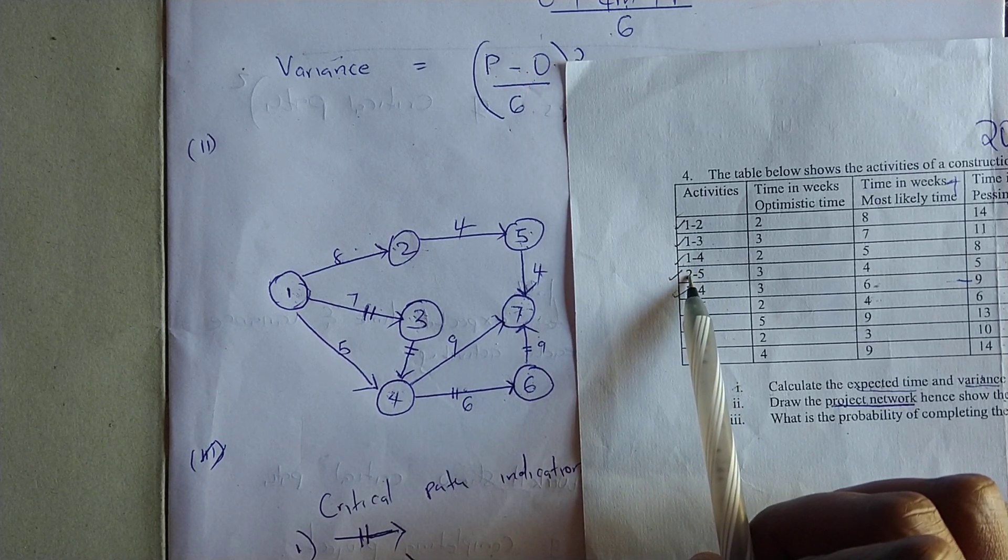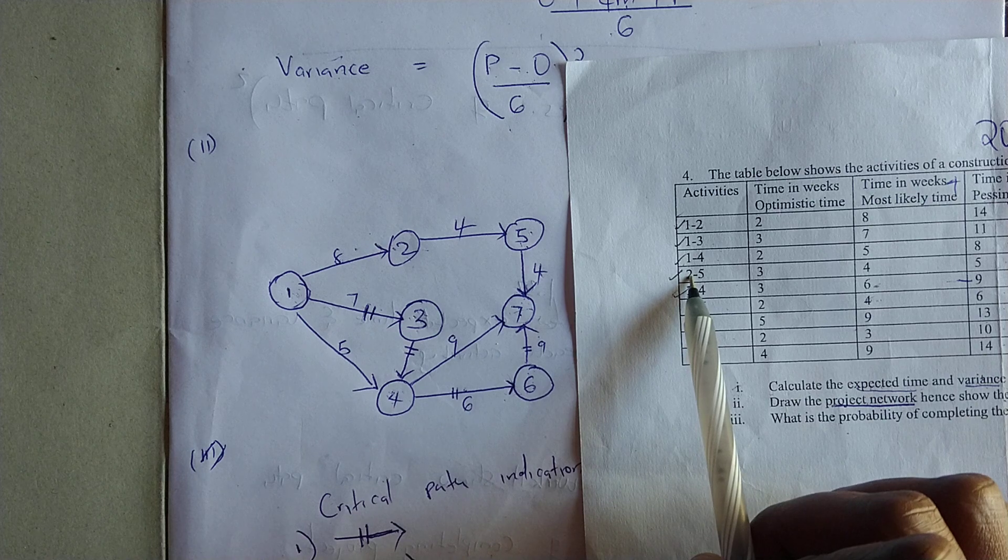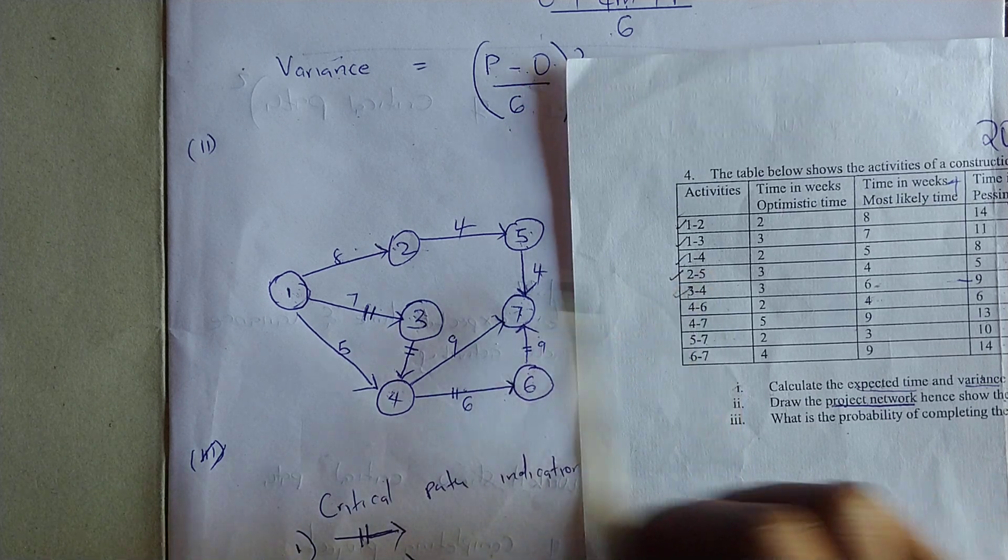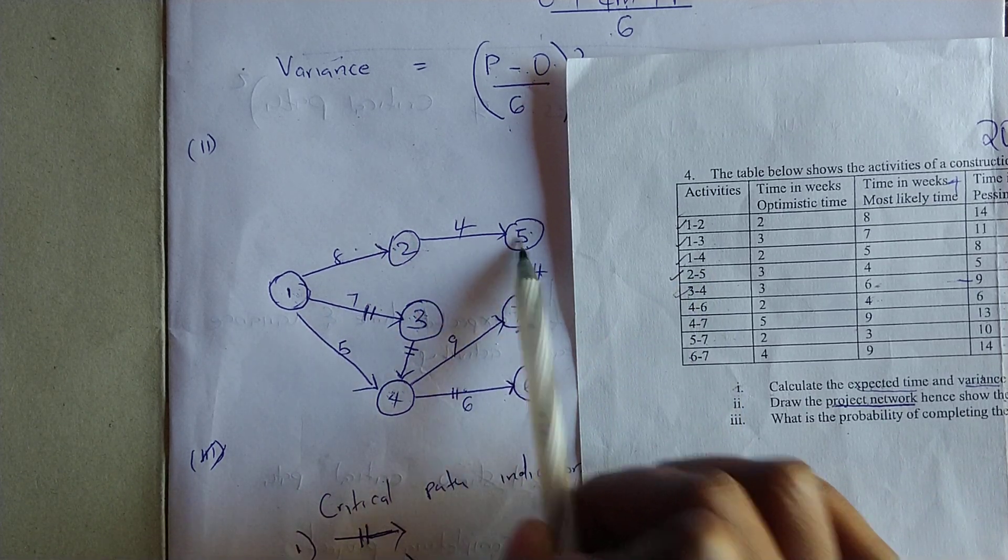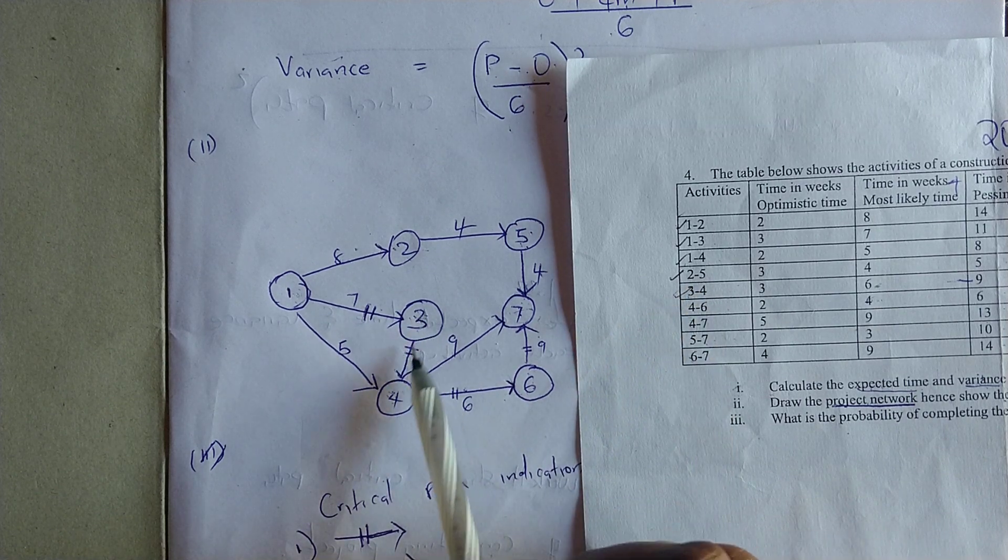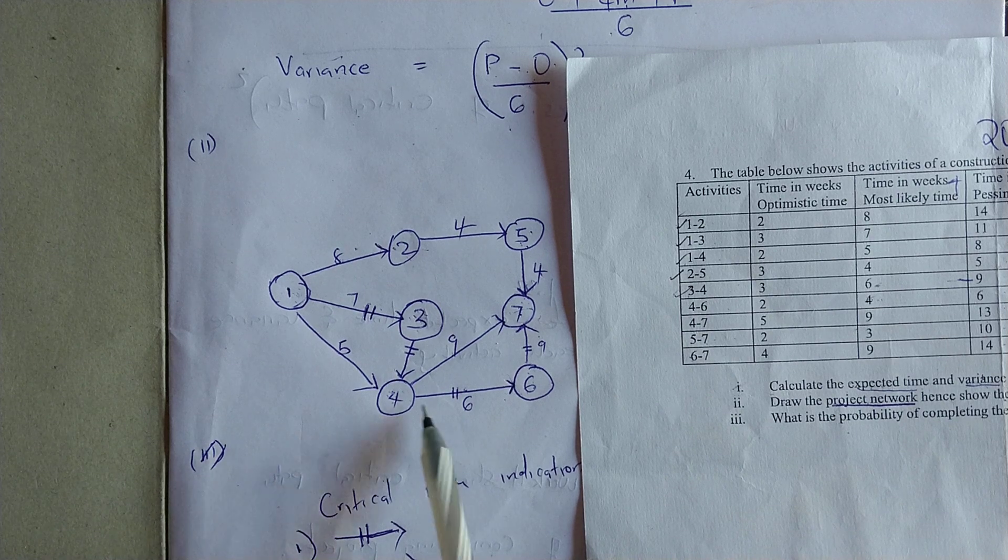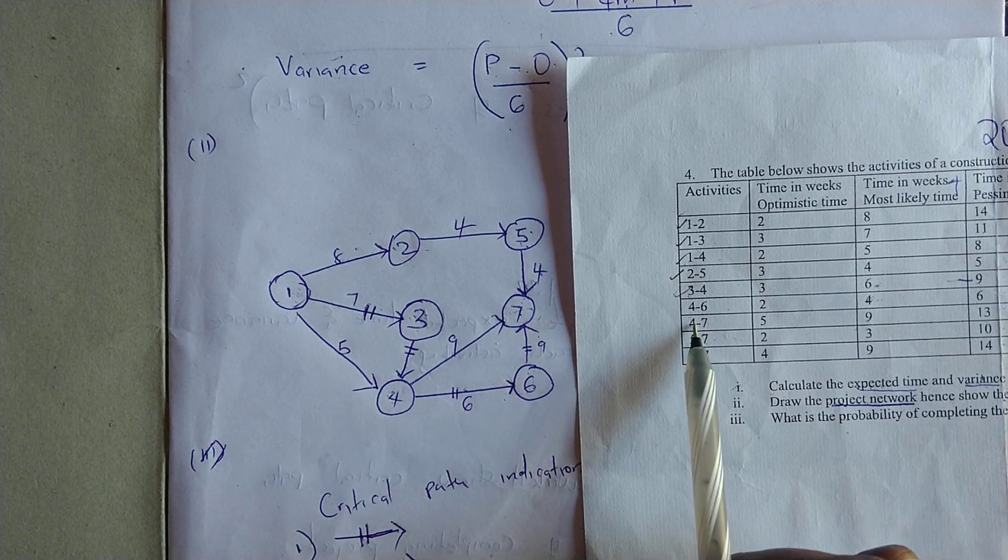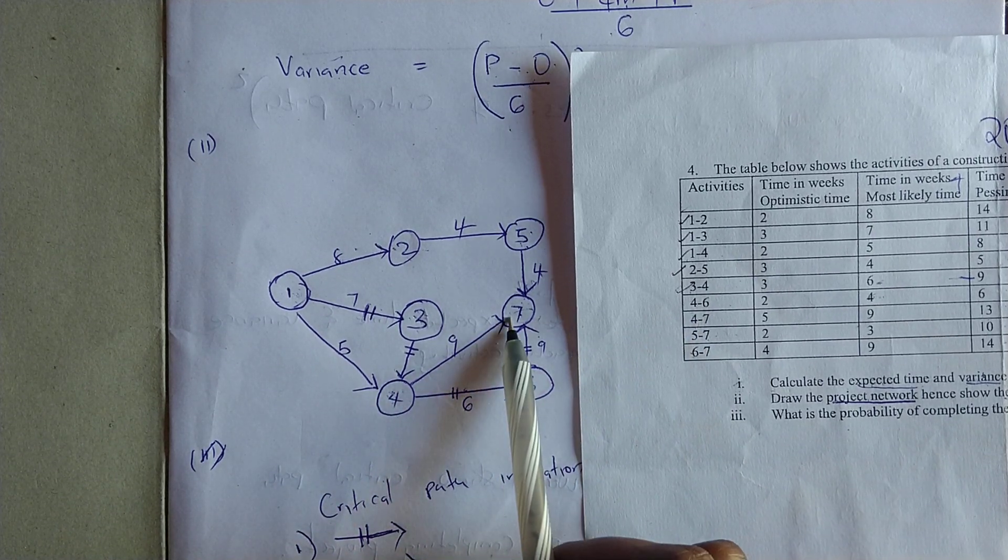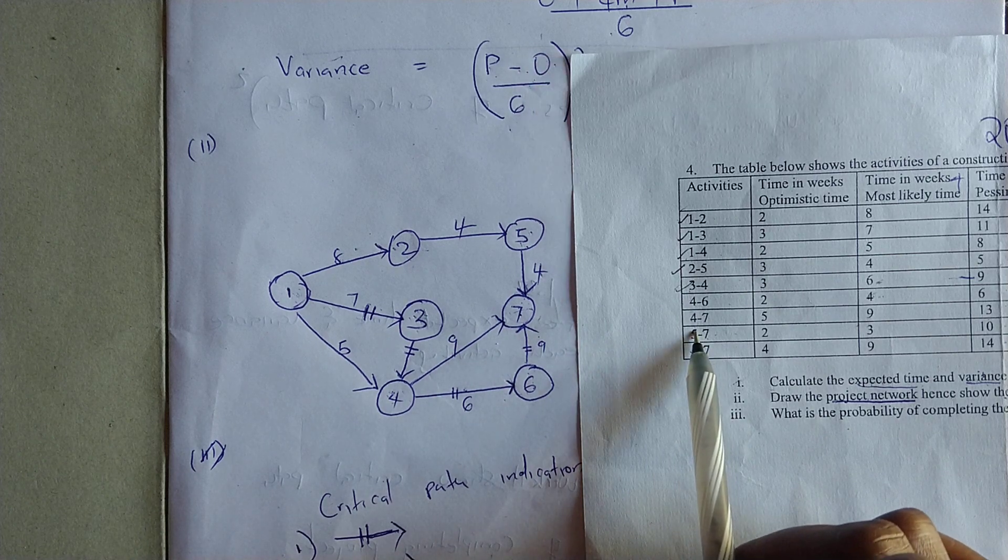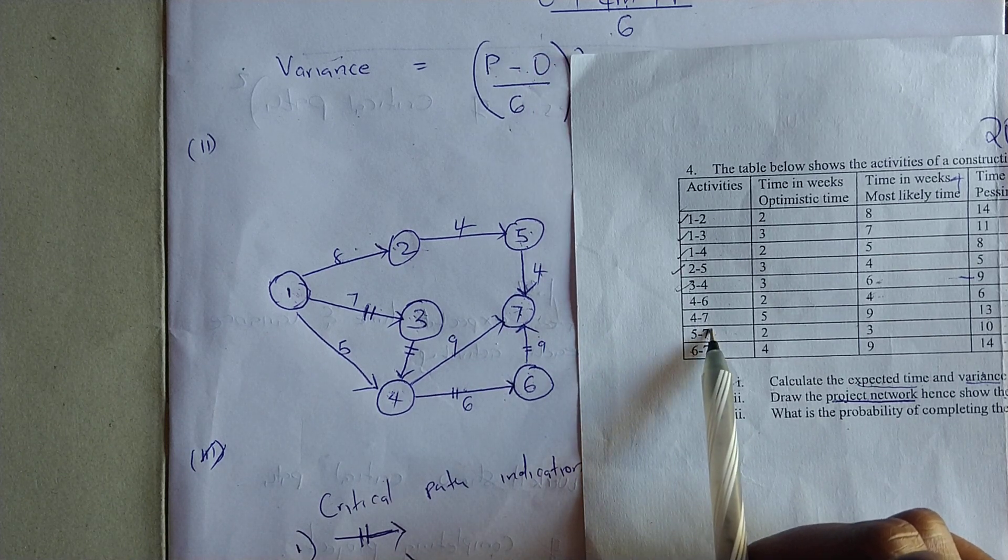Then we have activity five that will come from activity two, so from two to five. Then from three we have four. From four we have six. From four we still have seven. Then from five we have five to seven, and from six to seven.